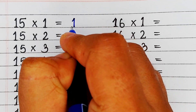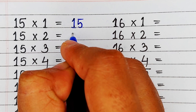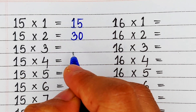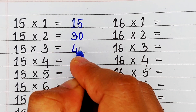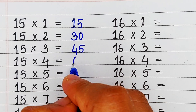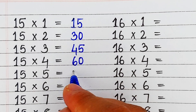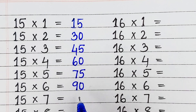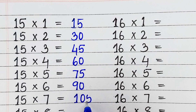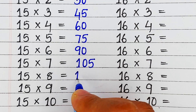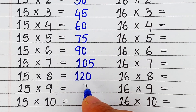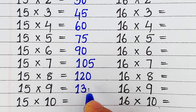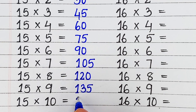Next is the table of 15. 15 1s are 15, 15 2s are 30, 15 3s are 45, 15 4s are 60, 15 5s are 75, 15 6s are 90, 15 7s are 105, 15 8s are 120, 15 9s are 135, 15 10s are 150.